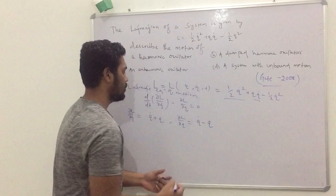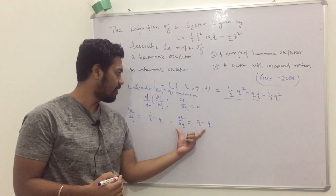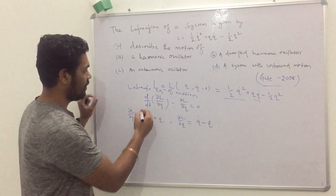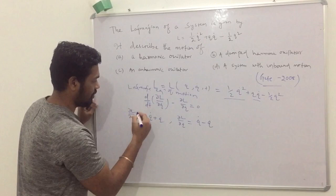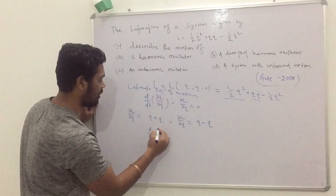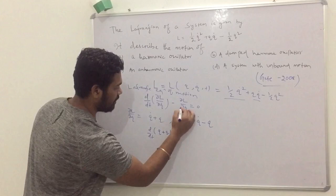Just substitute the values of ∂L/∂Q̇ and ∂L/∂Q into the Lagrangian equation of motion. You will get the actual equation of motion of this system. d/dt of (Q̇ + Q) minus (Q̇ - Q) equals zero.